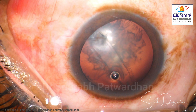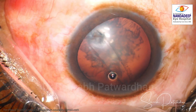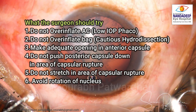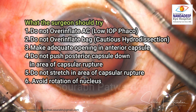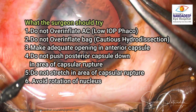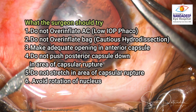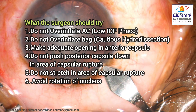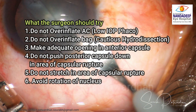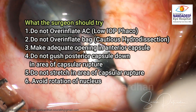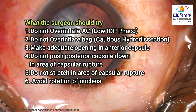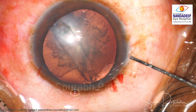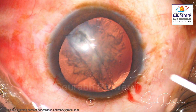This is a post-traumatic ruptured anterior capsule. You can see the tear has gone from zonule to zonule. The surgeon should try not to over-inflate the anterior chamber, use low IOP phaco, not over-inflate the bag, perform cautious hydrodissection, make an adequate opening of the anterior capsule, not push the posterior capsule down particularly in the area of capsular rupture, not stretch in the area of rupture, and avoid forceful rotation of the nucleus.